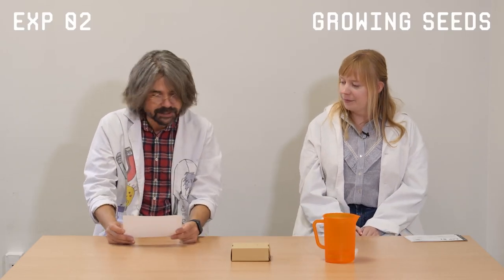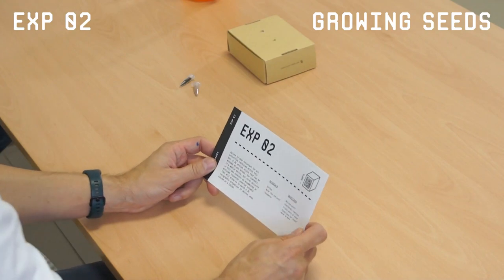So what is experiment number two? Number two is growing seeds on Martian soil.